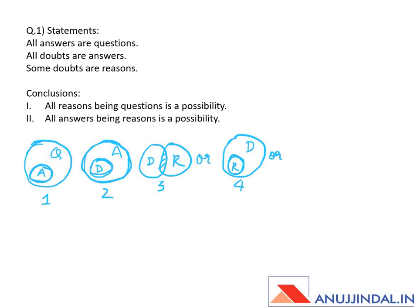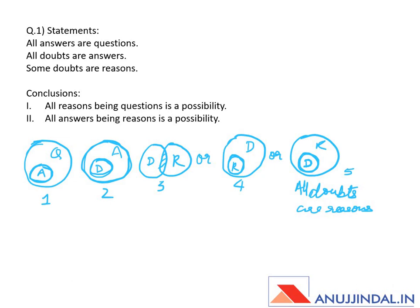There is another possibility: if these are reasons and these are doubts, now you can see all doubts are reasons. When there is a case of 'some,' we have to take into consideration the case of 'all' also — all doubts are reasons. Let's mark it number five.